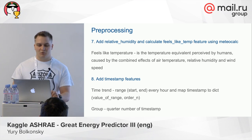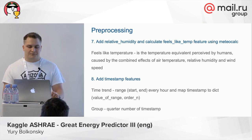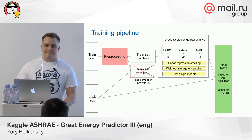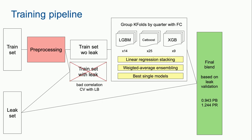It's also important to describe our training pipeline. In this competition, we had a training set and a leaked set, where the leak was scraped from different public internet sources. We applied our pre-processing to the training data and got two sets: a training set without the leak and a training set with the leak. After testing many models using the leak in training, it gave us bad correlation with the leaderboard, so we decided to remove it. For all our models, we used the training set without any leaked data.